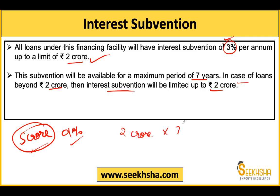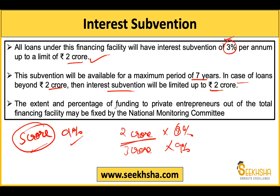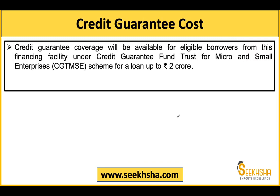The remaining 3 crore will be charged at the full rate. Funding to private entrepreneurs out of the total financing facility may be fixed by the National Monitoring Committee. A National Monitoring Committee has been created to ensure that the entire 1 lakh crore does not go only to private entrepreneurs or selected entities — the committee will set limits.